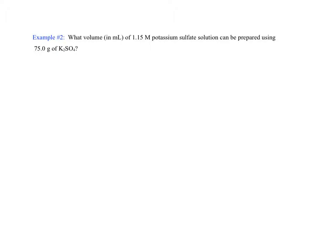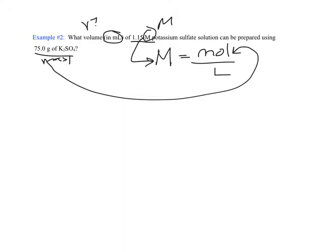Let's try another example. What volume in milliliters of a 1.15 molar potassium sulfate solution can be prepared using 75 grams of potassium sulfate? So it looks like we're going to look for a volume in milliliters. They've given us molarity, and they've also given us a mass. I know if I see molarity, it's moles over liters. Can I plug in 75 grams directly in there? No, I can't. It has to be in moles.